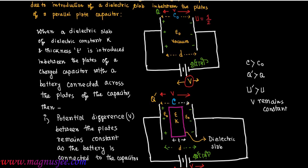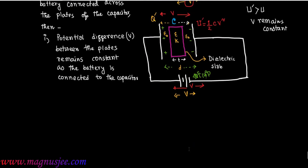Initially, the energy stored by the capacitor with vacuum only was U equal to half C0 V squared. The final energy stored by the capacitor changes to U prime, which becomes half C V squared. Initial energy was half C0 V squared; final energy is half C V squared.